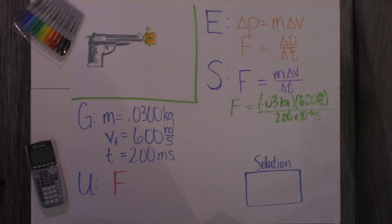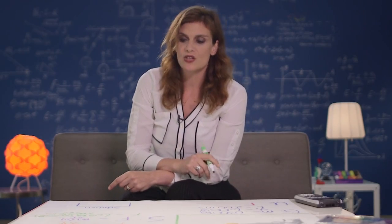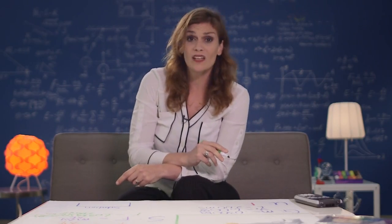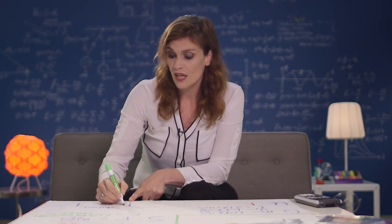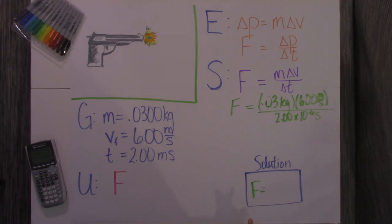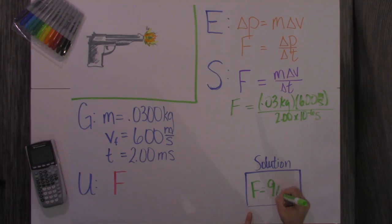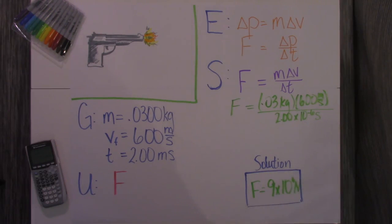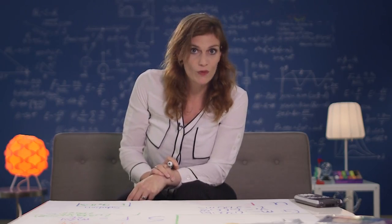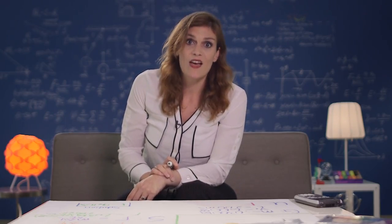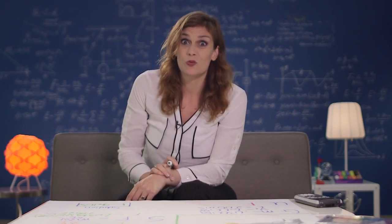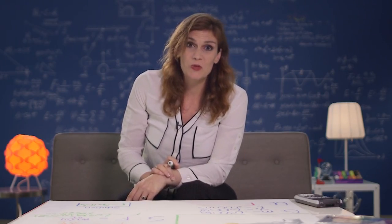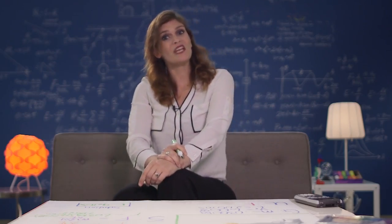We want our force to be in newtons, so put that into your calculator and the answer is 9 times 10 to the sixth newtons — or 9 million newtons of force in the barrel of that gun. That's pretty crazy! I hope that helps you with your impulse-momentum problems, and we'll see you in the next video.